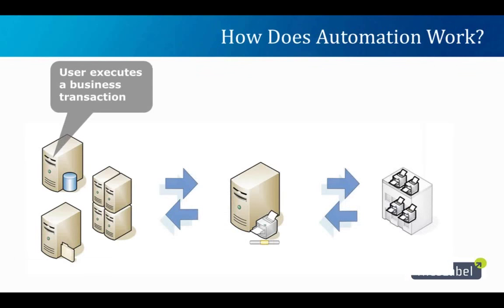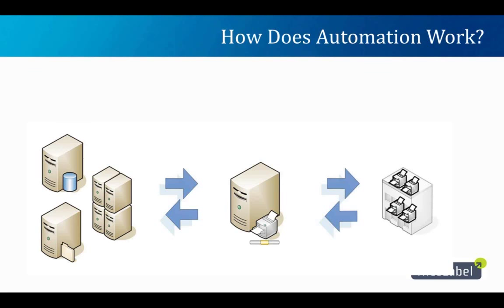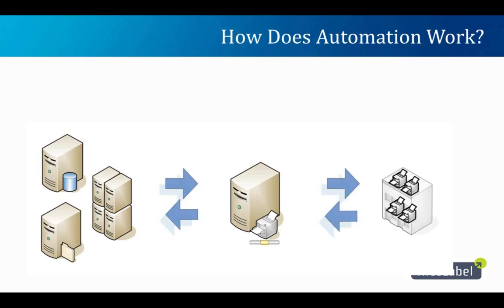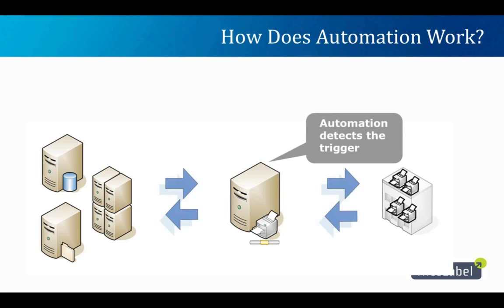How does Automation work? Your user executes a business transaction from your host system, which outputs some type of transaction — for Oracle or SAP it could be an XML file; for older legacy systems it could be a text file. The business system generates a trigger that transmits data to the centralized server. Typically a text file is sent and dropped into a shared folder — sometimes called a hot folder — and the Automation Server monitors that location or a TCP/IP socket connection for incoming data.